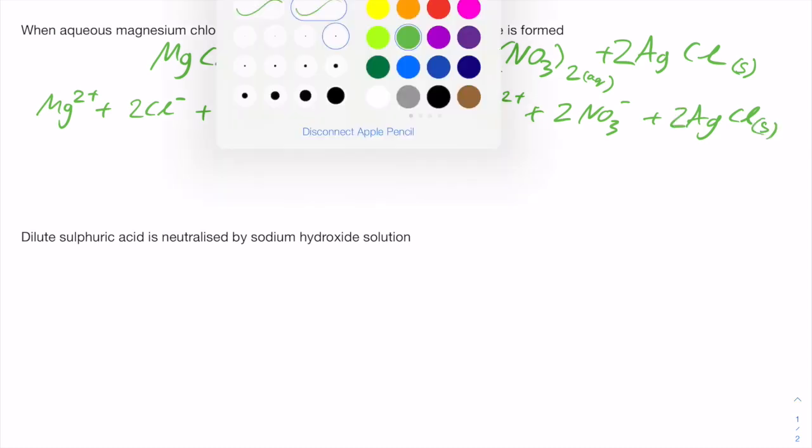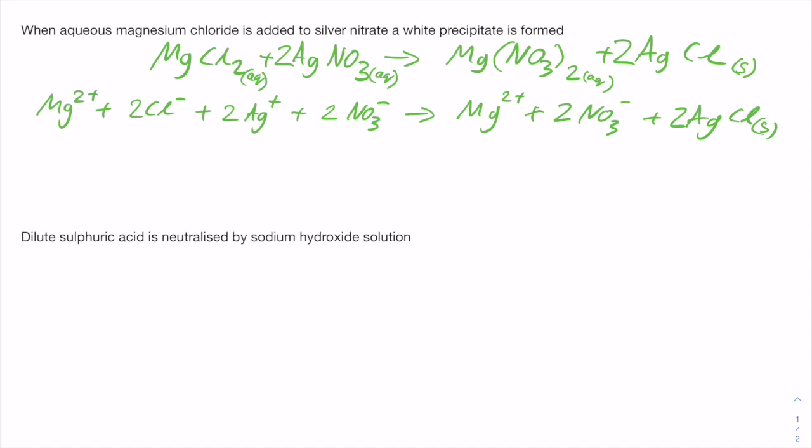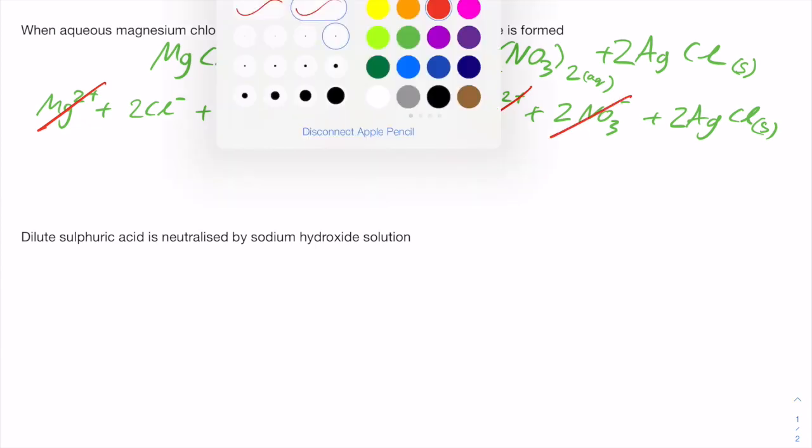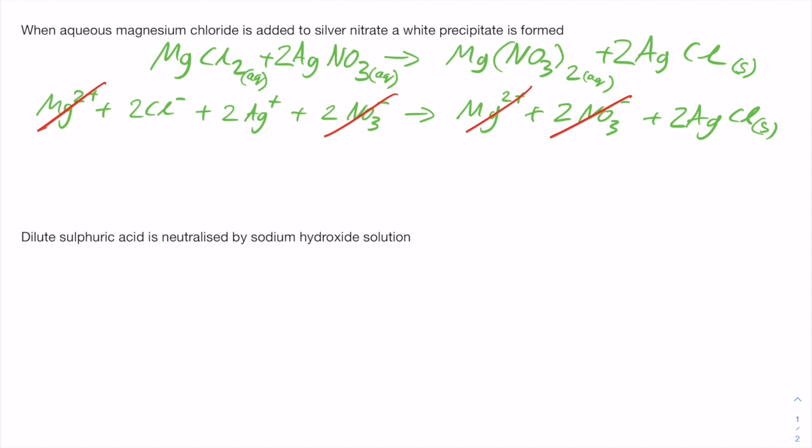We can now quickly look through that and we can cancel across any ions that are on both sides, so we'll cancel the magnesium here and the magnesium here, and then we'll cancel the nitrate here and the nitrate here.